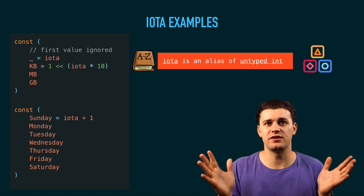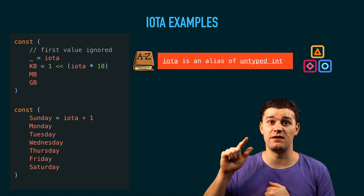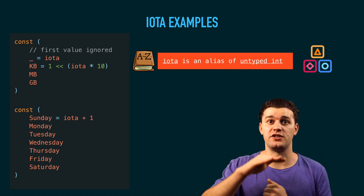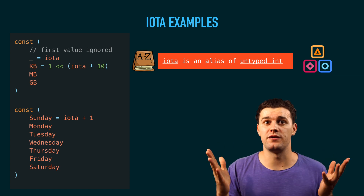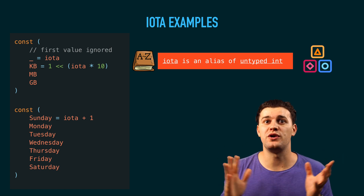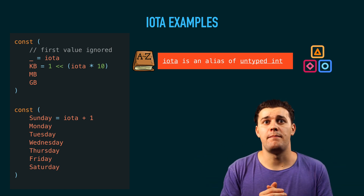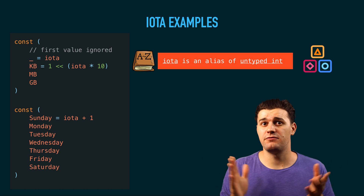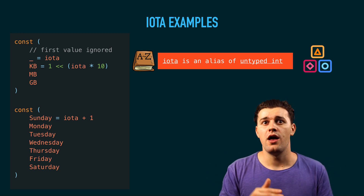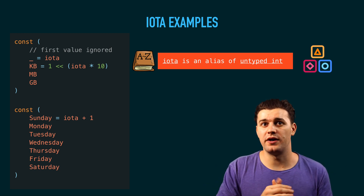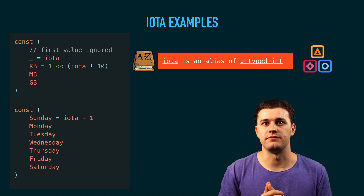IOTA starts from zero. That's why in the first example we use an underscore — to ignore that zero value because we don't need that constant. As I said earlier about the blank identifier, when we don't need something in Go, we just underscore it, meaning we're not using it.